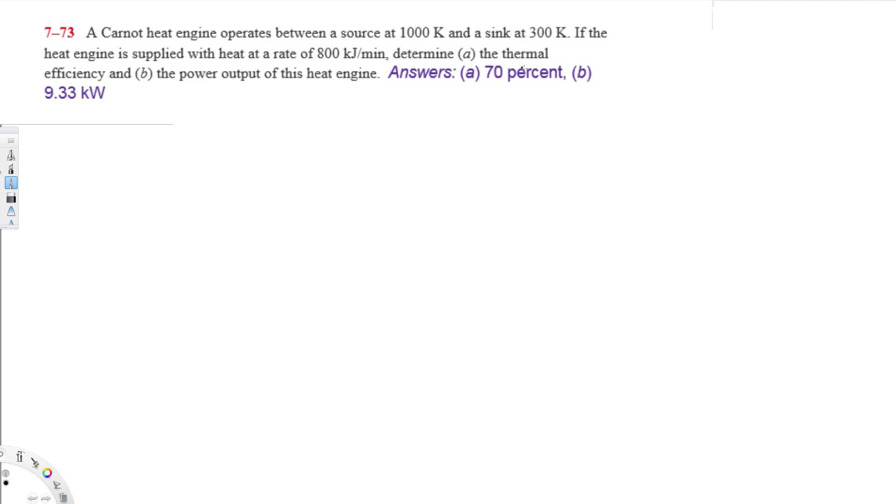Let's see first of all how we can calculate the thermal efficiency. To calculate the thermal efficiency, we have this equation: eta thermal is equal to 1 minus TL over TH. TL is going to be the temperature at the sink, and TH is going to be the temperature at the source.